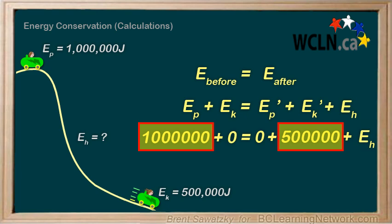Which means that the rest of the energy became heat energy. Or, 1,000,000 joules minus the 500,000 joules equals a remainder of 500,000 joules of energy converted to heat.